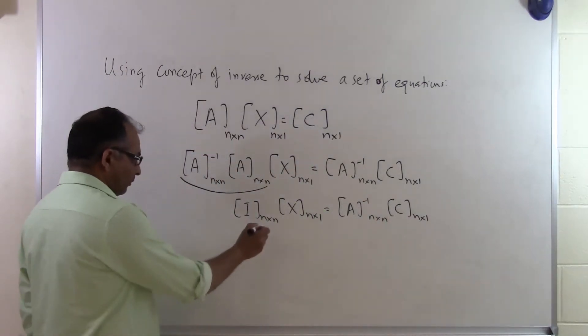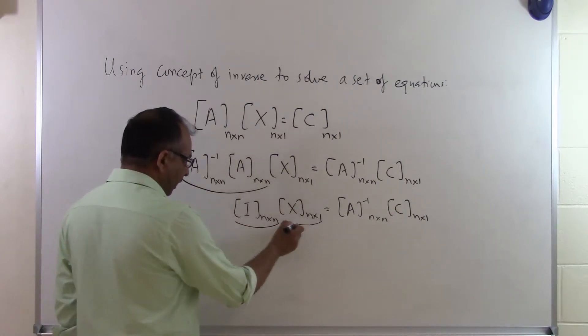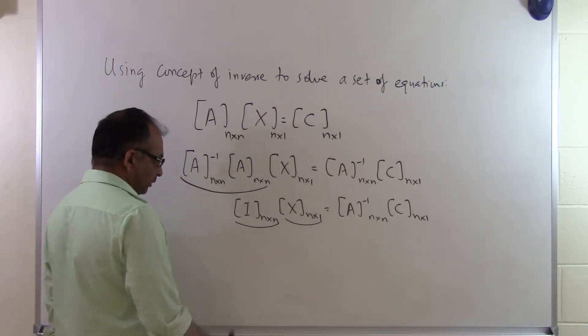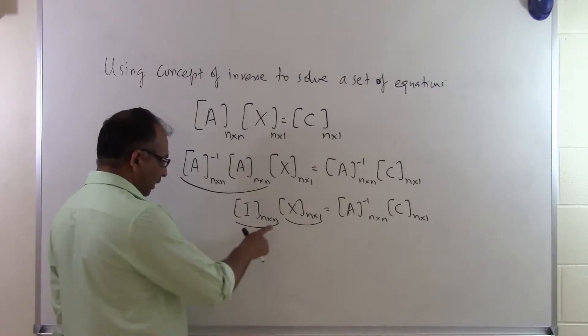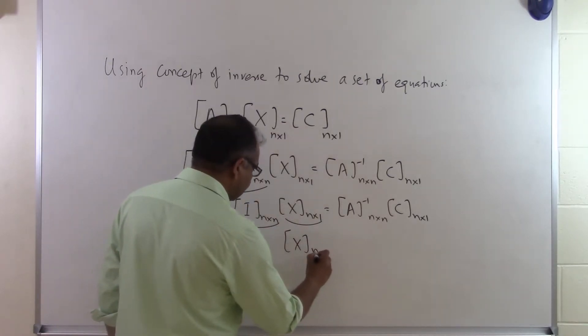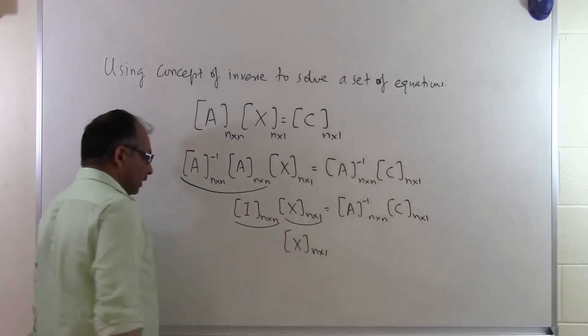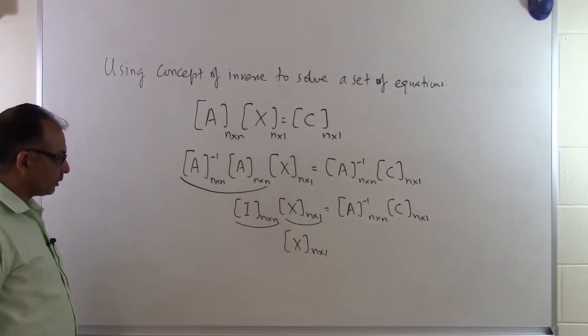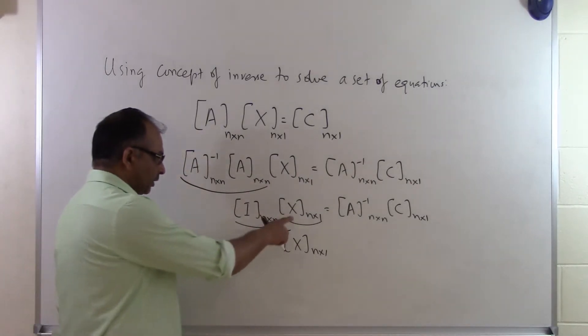But then I know that if I multiply the identity matrix by a vector like this one, this multiplication is legal, it is allowed because the number of columns here is same as the number of rows here. But I will end up with x itself because any time a matrix is multiplied by identity matrix and that matrix multiplication is allowed, you end up with the matrix itself.